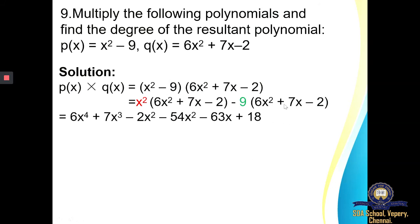X square into 6X square — 6 remains as it is and since X has the same base I can add the powers: 2 plus 2 is 4, giving me 6X power 4. Next, X square into 7X — 7 remains, powers 2 plus 1 give power 3, so 7X power 3. Then X square into minus 2 gives minus 2X square. Next, minus 9 into 6X square gives minus 54X square; minus 9 into plus 7X gives minus 63X; minus 9 into minus 2 gives plus 18.